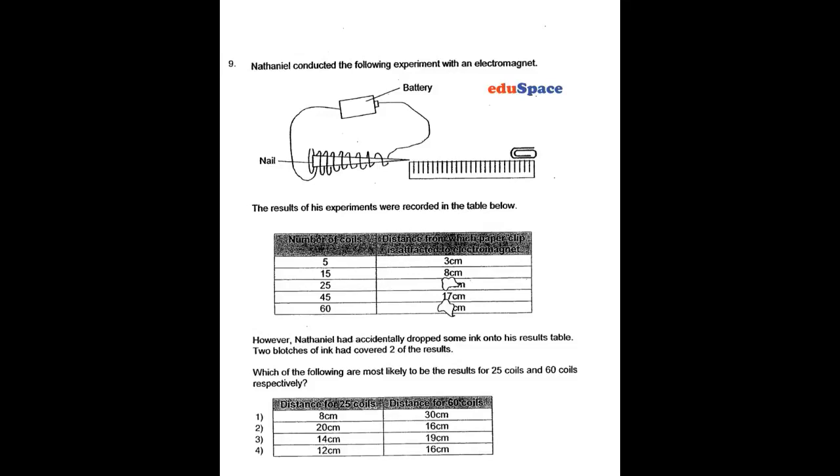In question 9, we have an experiment with an electromagnet, and if the number of coils increase, we should recall that the electromagnet should be stronger, and so it should be able to attract the paper clip at a greater distance.